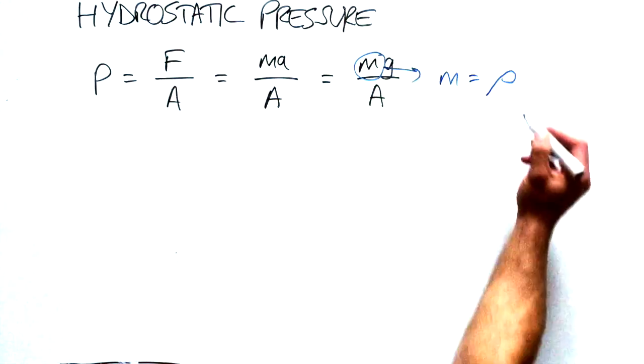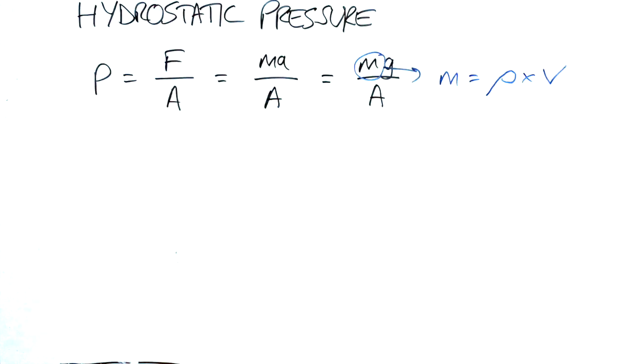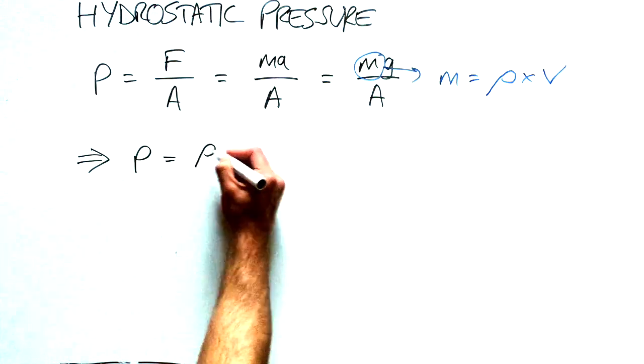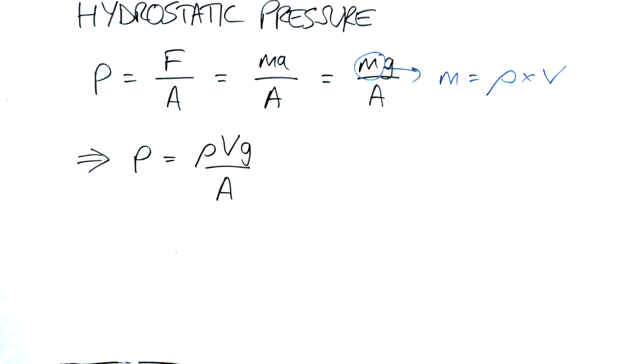Now mass is equal to density, which is mass per unit volume, multiplied by volume. Which implies that pressure is equal to density times volume times g divided by area.